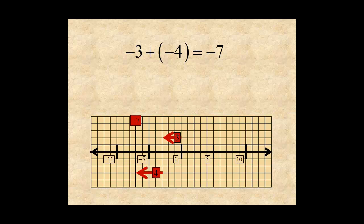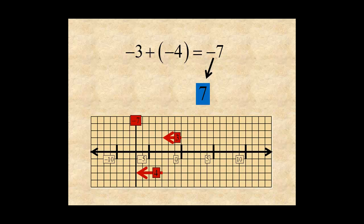There are two important things to understand about this example. First, the sign of the sum is negative because both numbers are negative. Second, the absolute value of the sum, 7, is the sum of the absolute values of the two numbers, 3 plus 4.